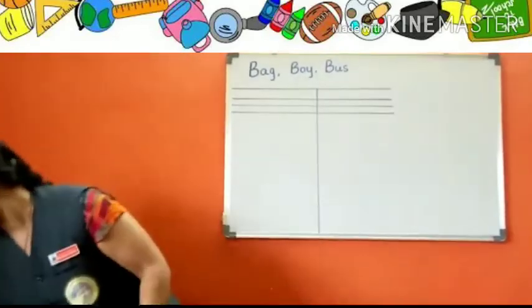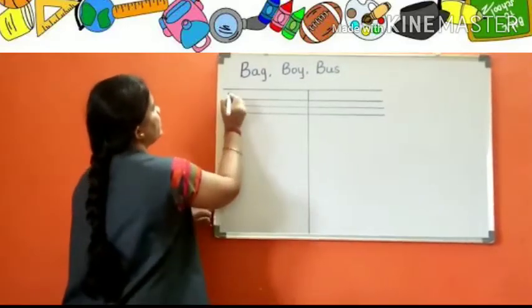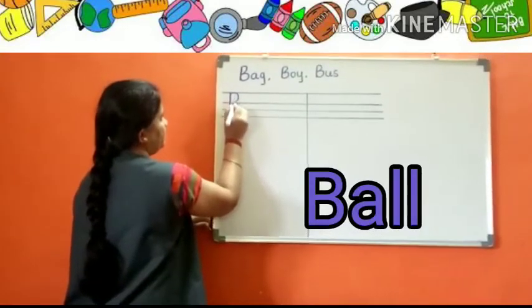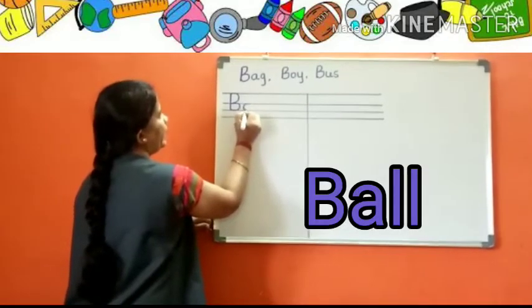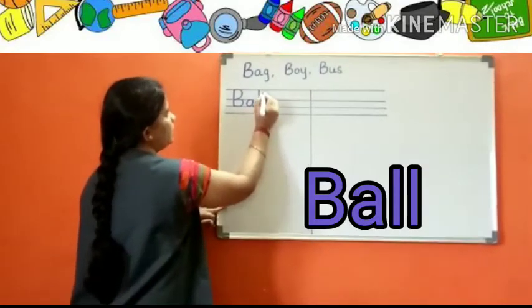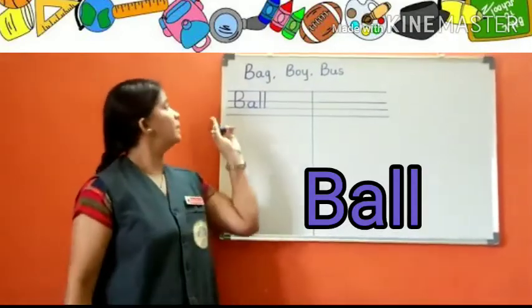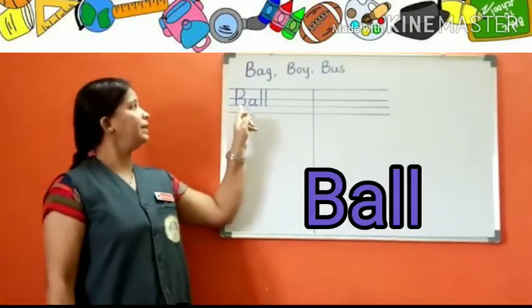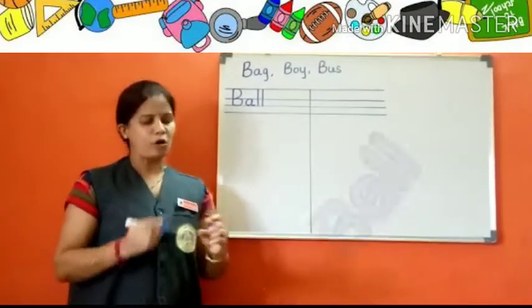Shall we write the spelling of ball children? First letter must be capital B-A-L-L, ball. What is the spelling of ball children? B-A-L-L, ball.